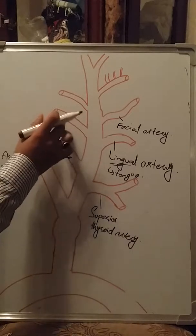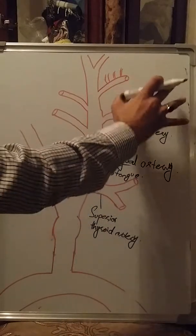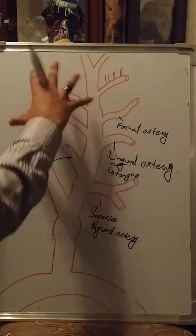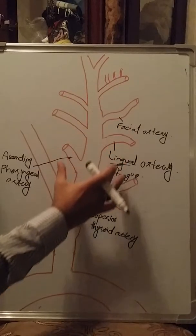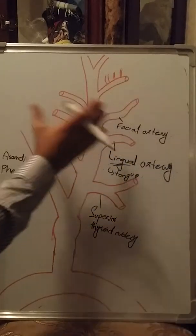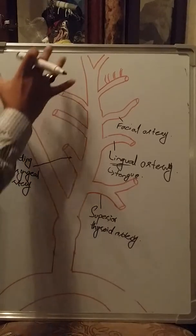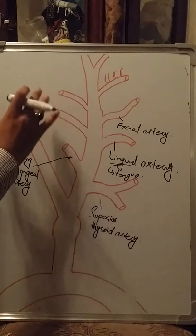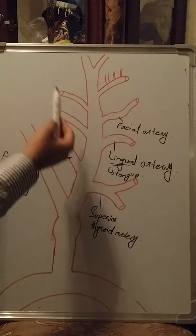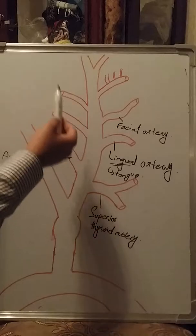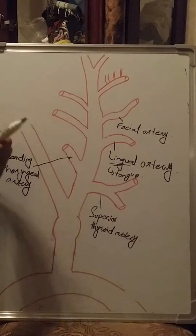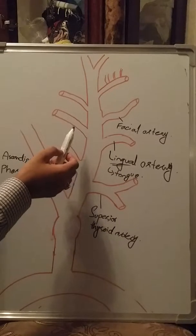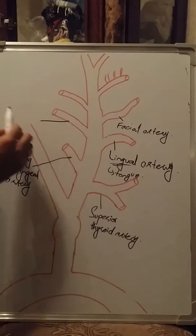Considering the front and back of the head — the facial side is the front, and the back includes the occipital and superficial temporal regions. The arteries providing blood supply to the occipital and superficial temporal regions are found posteriorly. The artery supplying the occipital region at the base of the back of the head is called the occipital artery.